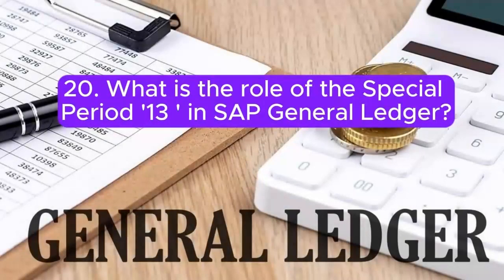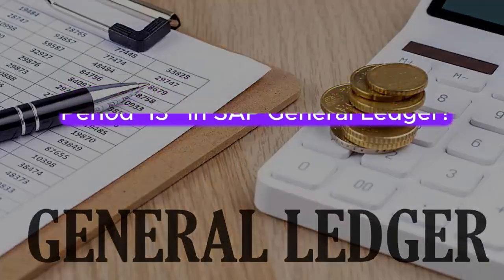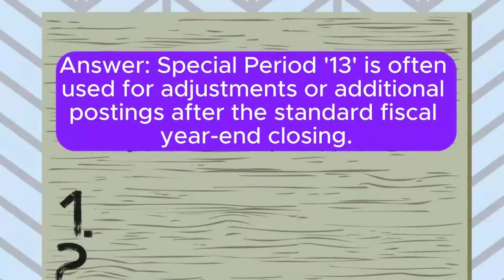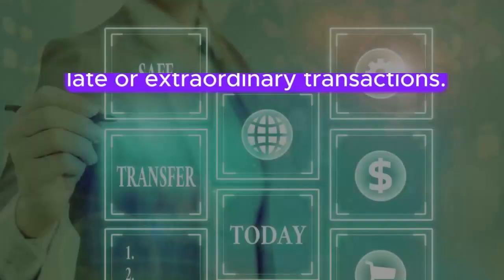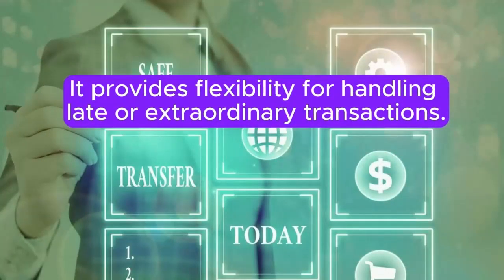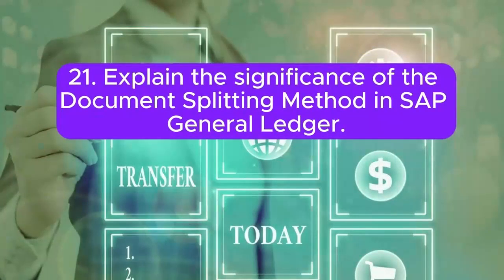Question 20: What is the role of the special period 13 in SAP General Ledger? Answer: Special period 13 is often used for adjustments or additional postings after the standard fiscal year-end closing. It provides flexibility for handling late or extraordinary transactions.